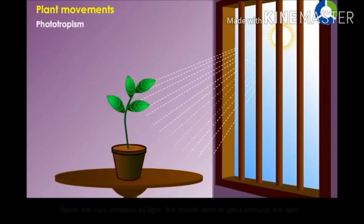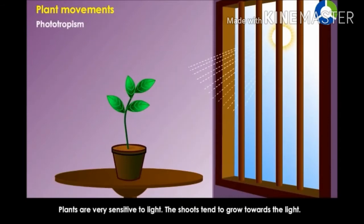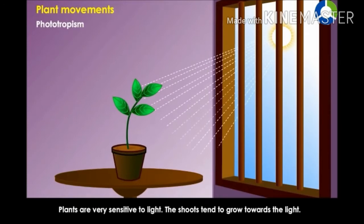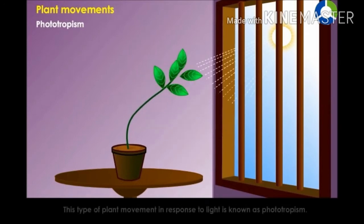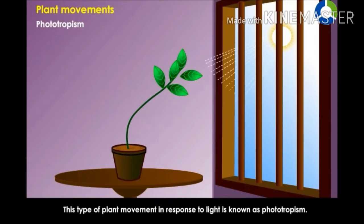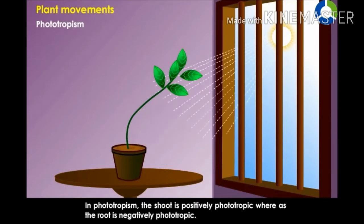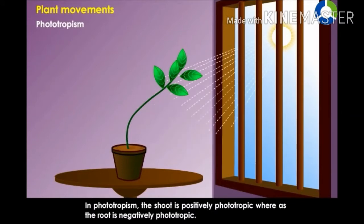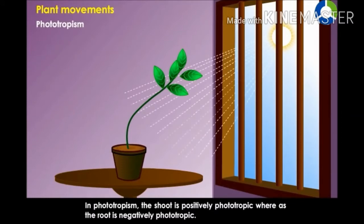Plants are very sensitive to light. The shoots tend to grow towards the light. This type of plant movement in response to light is known as phototropism. In phototropism, the shoot is positively phototropic, whereas the root is negatively phototropic.